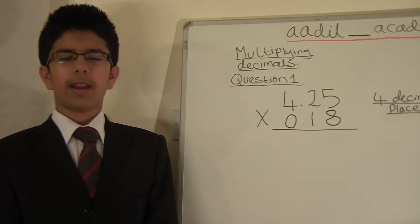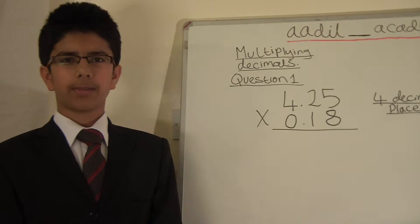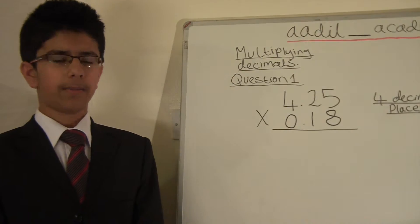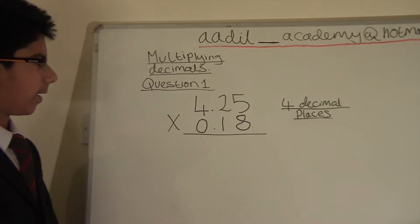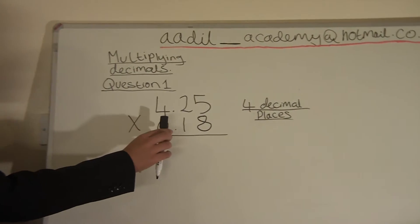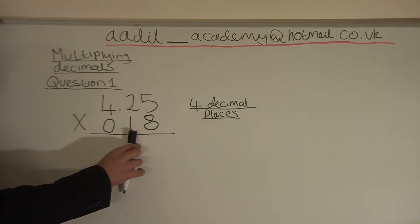Hello and welcome to Aadil Academy and today I'll be teaching online. We are doing multiplying decimals and this is question number one. The two decimal numbers that we are multiplying today are 4.25 multiplied by 0.18.